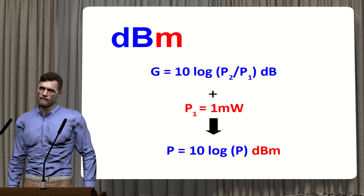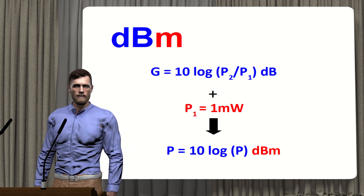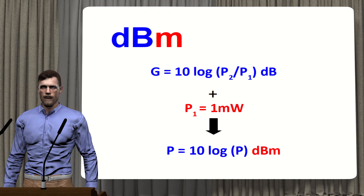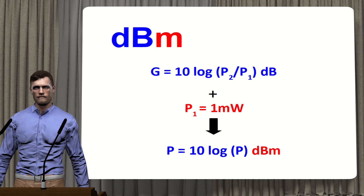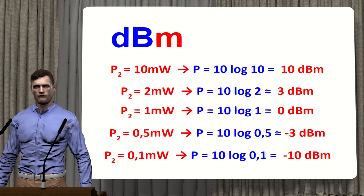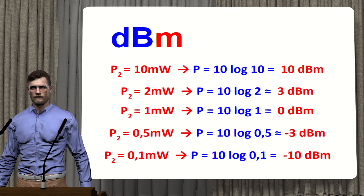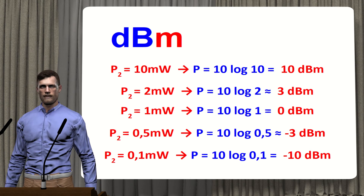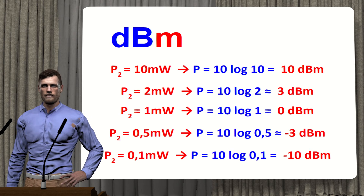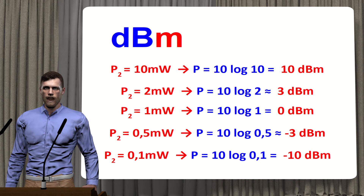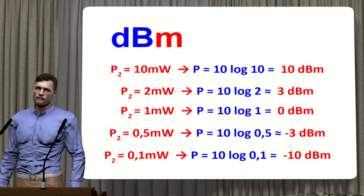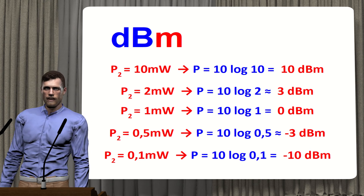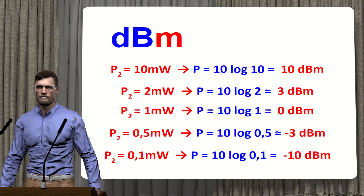Starting with dBm: the input power used as reference is 1 milliwatt. Therefore, the power in dBm is calculated by multiplying 10 by the logarithm of the power expressed in milliwatts. For example, 10 milliwatts equals 10 dBm; 2 milliwatts equals approximately 3 dBm; 1 milliwatt equals 0 dBm. If the power is 0.5 milliwatts, the result is approximately minus 3 dBm; and 0.1 milliwatts gives minus 10 dBm. If power is greater than 1 milliwatt, dBm is positive; if less than 1 milliwatt, dBm is negative.